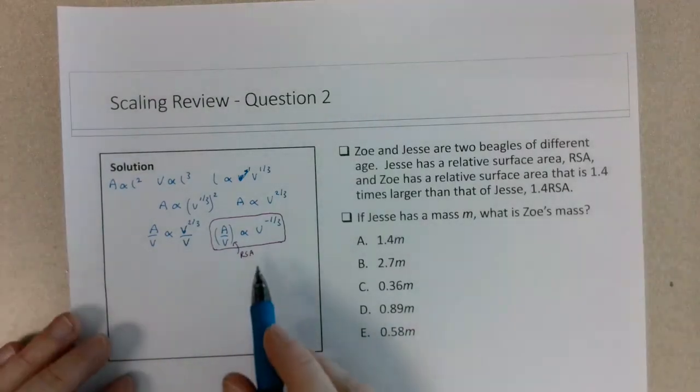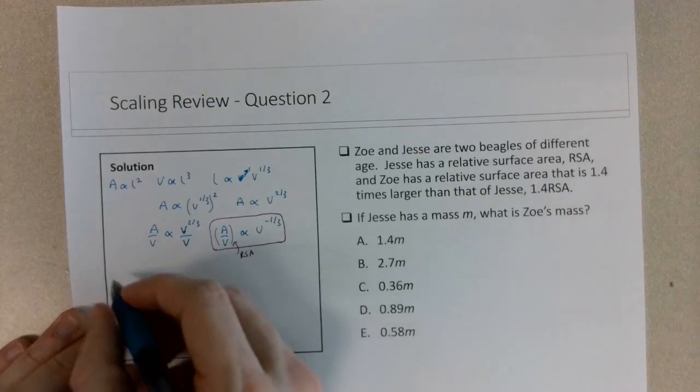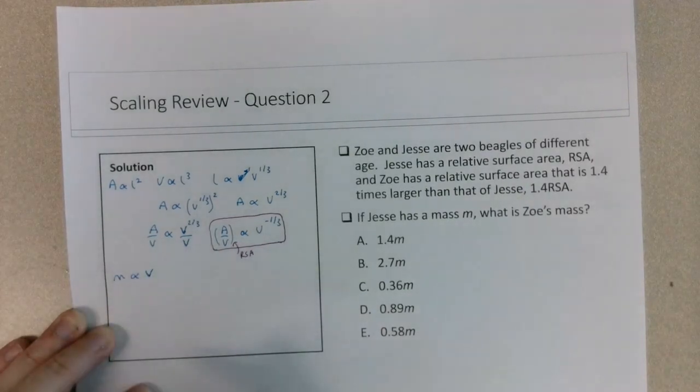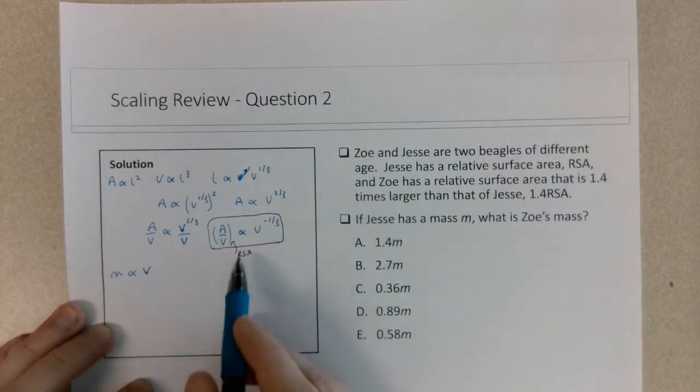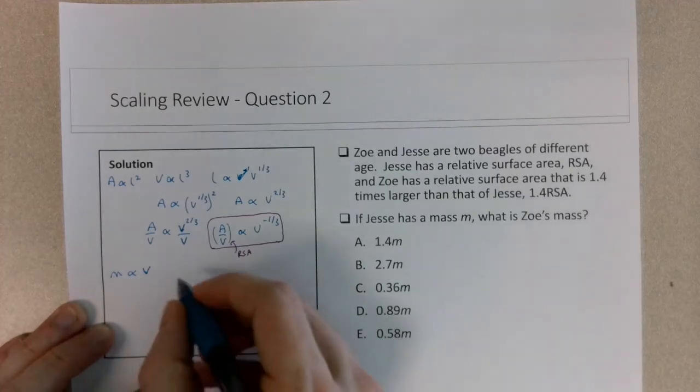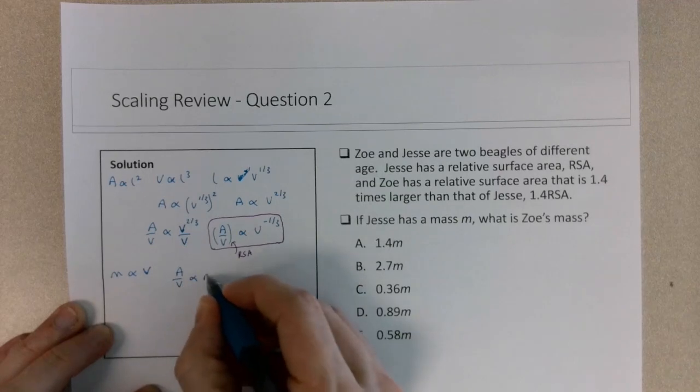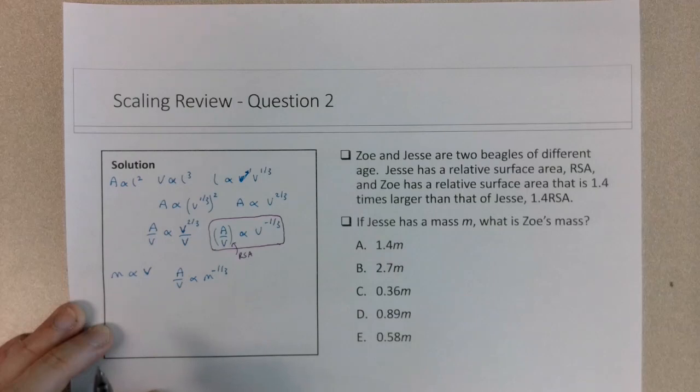So also knowing that from density, I know that mass changes proportionally with volume, assuming the density is constant as the object grows. So then we can basically for any place that we see V, we can replace it with M. So area over volume scales with mass to the negative one-third, again because volume and mass are proportional.